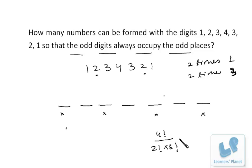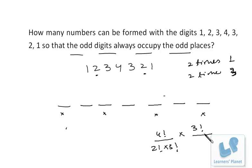Now we also need to arrange the remaining numbers in the even places. The remaining numbers are 2, 2, and 4 — three numbers total. They can be arranged in 3 factorial ways, but since 2 is repeated two times, we further divide by 2 factorial.